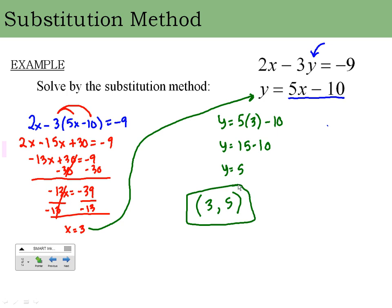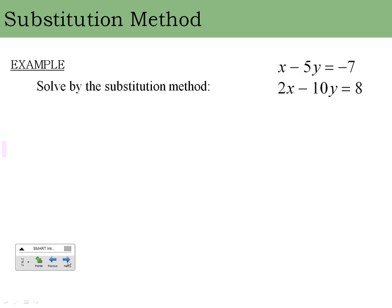That's what we do when it's already solved for us. The next problem is not solved for us, so we have to do some work first. The substitution method is most efficient when one variable doesn't have a coefficient. This x has an implied coefficient of 1, so it's easy to isolate. I add 5y to the other side and get x equals 5y minus 7.